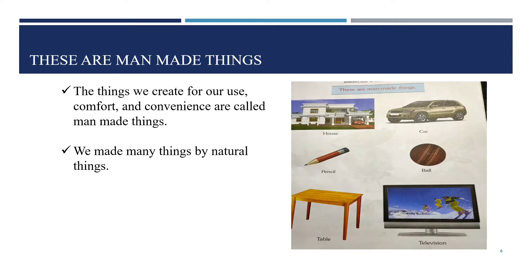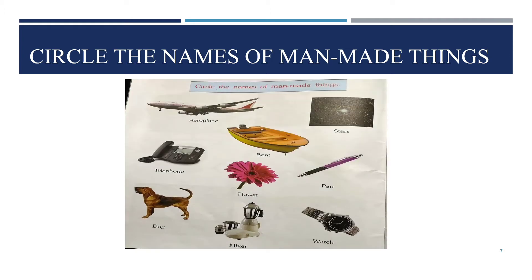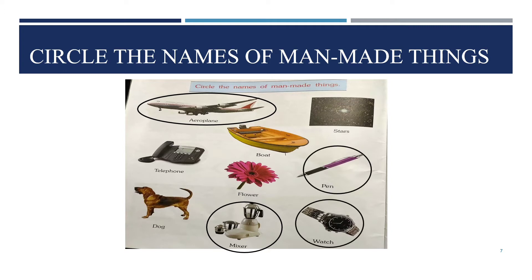So we learned: what is a computer? It is an electronic machine. The second point is natural things — tree, fish. The third is man-made things — car, house, television. We also did the exercise where we circled the man-made things: aeroplane, mixture, pen, watch, telephone. These all are the man-made things that we circled in the previous lecture. You have to remember this.